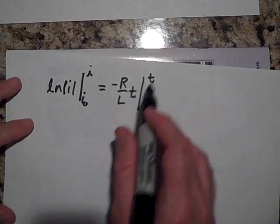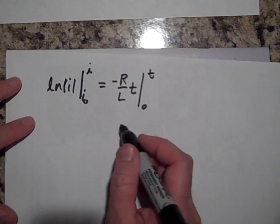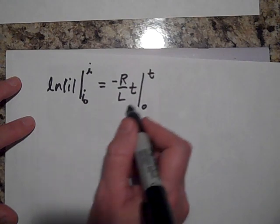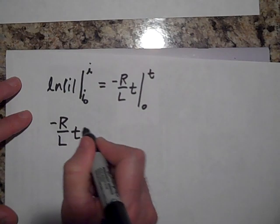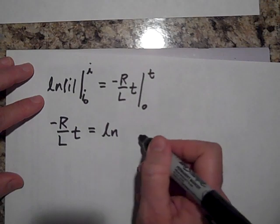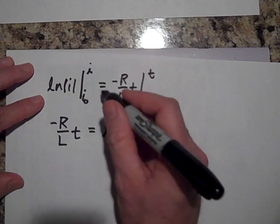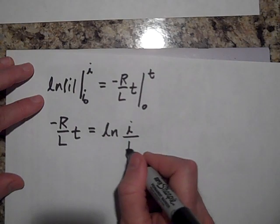Well, when I put in these, this just turns into, when I put in the t and the zero, this is just going to turn into I'm going to put this on this side: negative R over L times t. On this side however, that's going to go to the natural log of I over I naught. Let's call that I naught, capital I naught I suppose.